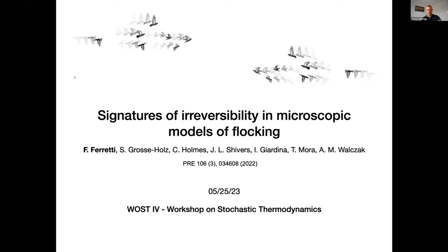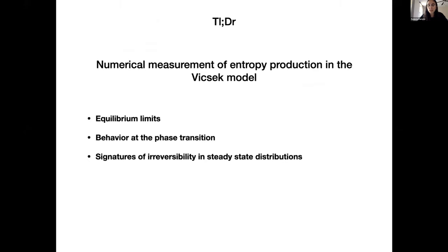Yes, thank you very much. I want to start by thanking the organizers for letting me give this talk to present this work that was published last year. It's about signatures of irreversibility in microscopic models of flocking. The idea is very basic. We just realized that there was a gap in the literature of the Vicsek model, surprisingly, that was about the measurement of the entropy production in numerical simulations using microscopic models. So we basically did it, and this allowed us to study the equilibrium limits, the behavior at the phase transition of the entropy production rate, and to detect signatures of irreversibility in steady-state distributions. So that's basically all I will be talking about in the next 10-15 minutes.